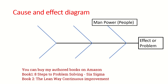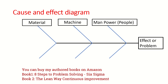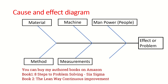The first subhead is manpower, also known as people. The second is machine. The third is material. The fourth is method. The fifth is measurement, and the sixth is mother nature.